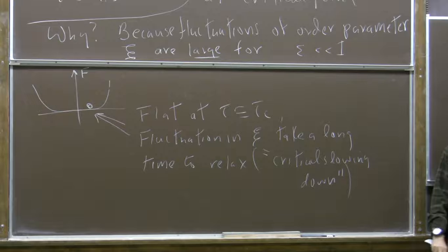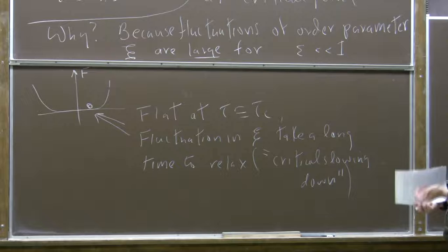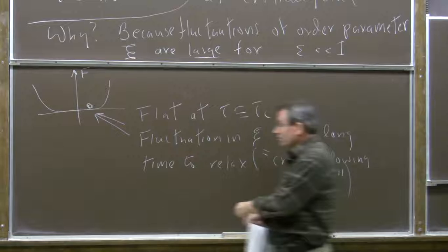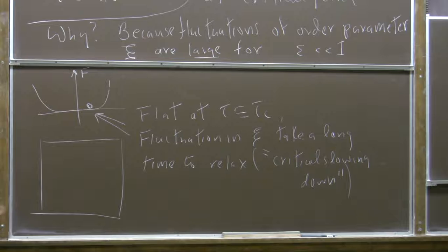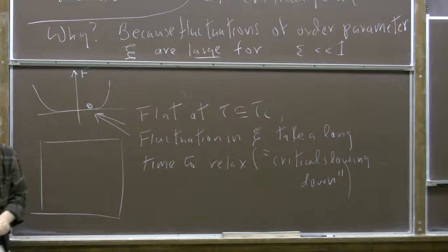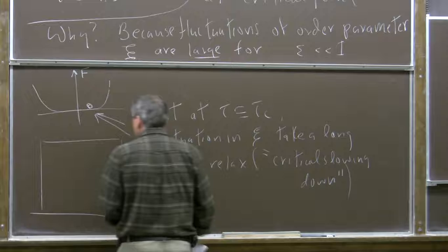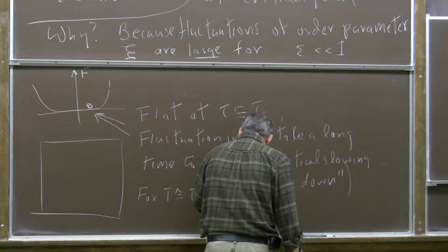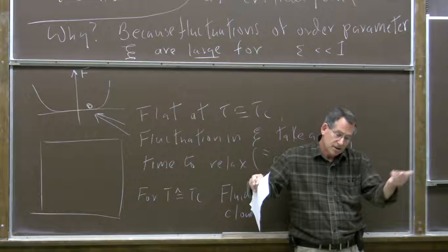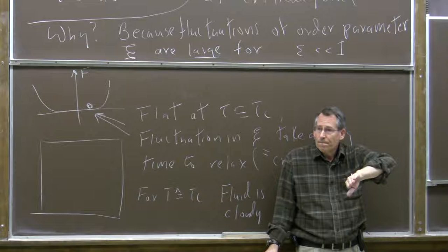Fluctuations can grow very large in spatial extent as well as temporal extent. Suppose you have water vapor above the critical temperature and let it cool, passing through the critical temperature. What happens is it gets all cloudy. When the temperature is a little above T_c it's transparent, and a little below too, but right near T_c it gets all cloudy. Why? Because there are big fluctuations in density — regions that are under-dense and over-dense with fairly large spatial extent.